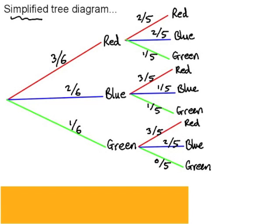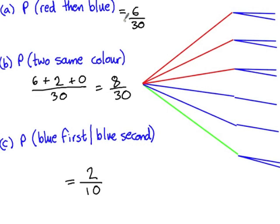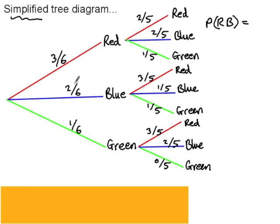So answering the same questions again: firstly, what's the probability of selecting a red then a blue? We can answer this by multiplying along the branches. The probability of red then blue is three over six multiplied by two over five, which is six over thirty.